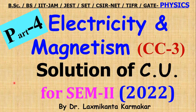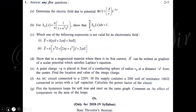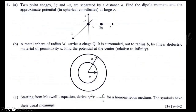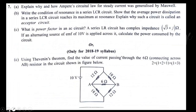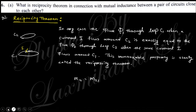Hello, welcome everyone. This is part four of the solution of paper CC3, that is Electricity and Magnetism for Physics Honours under University of Calcutta, Semester Two. This is the question paper of 2022. In the previous three lectures we completed up to question number five, and in this part we will discuss question number six and question number seven.